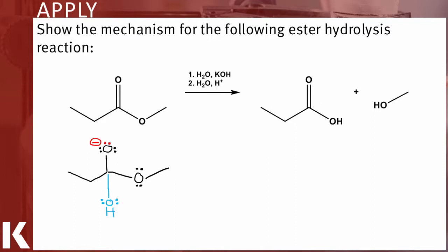For starters, our carbonyl oxygen is carrying a negative charge. The carbonyl carbon is having its electrons stolen by not one, not two, but three oxygens. So carbon is going to be pulling these electrons back into a double bond.